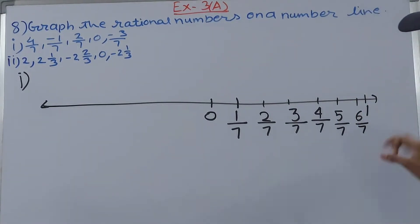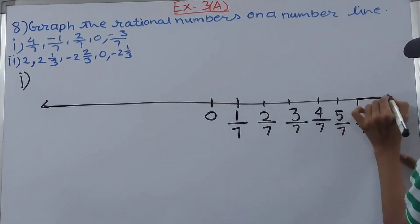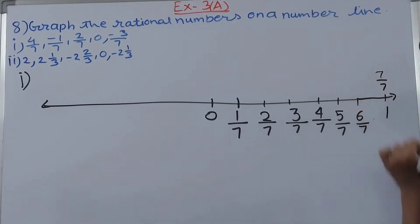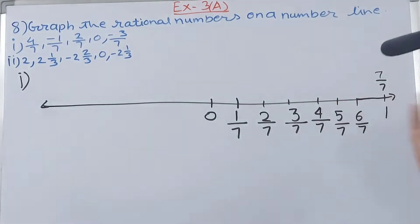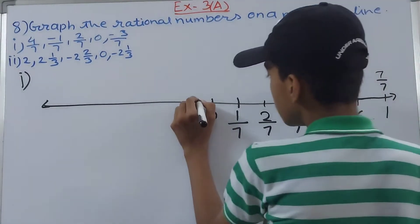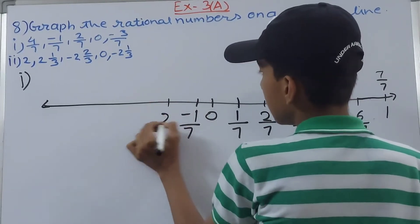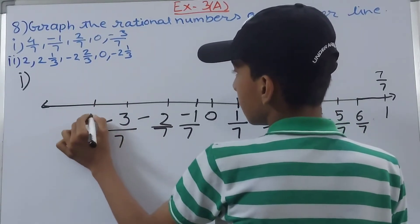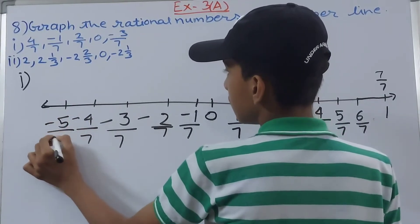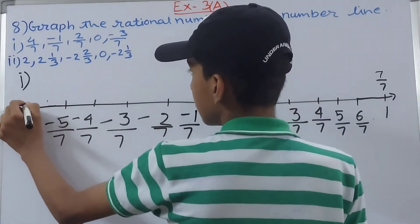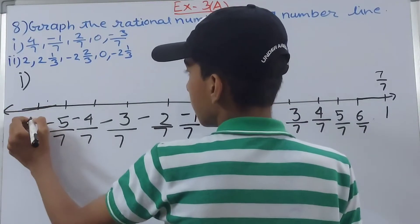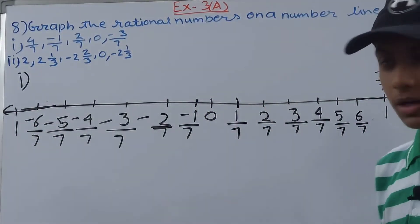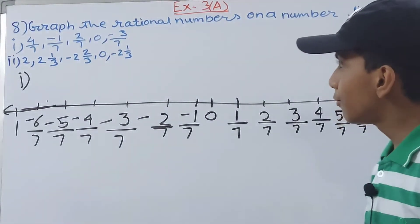We extend the line a bit further — here is 1 whole, which you can also write as 7 upon 7. We are done with the positive side. Now for the negative side, we do the same: minus 1 upon 7, minus 2 upon 7, minus 3 upon 7, minus 4 upon 7, minus 5 upon 7, minus 6 upon 7, and minus 1.